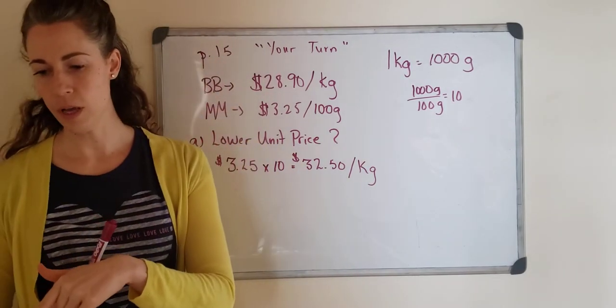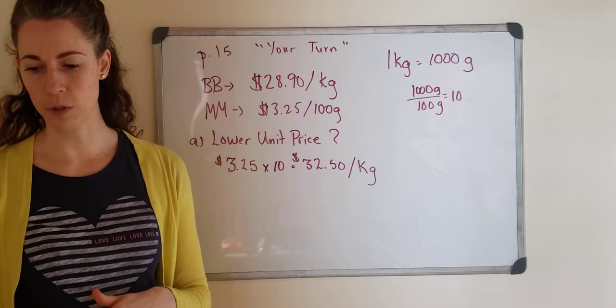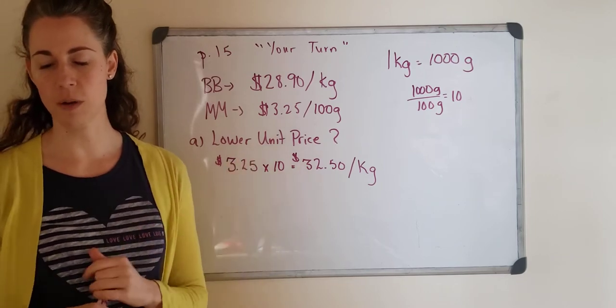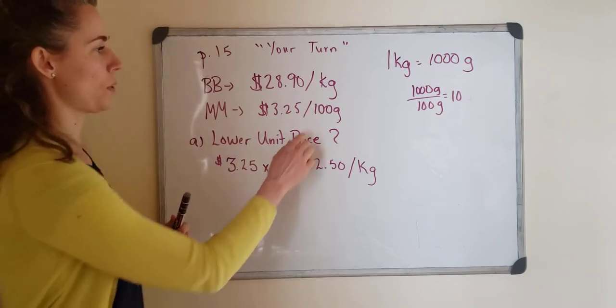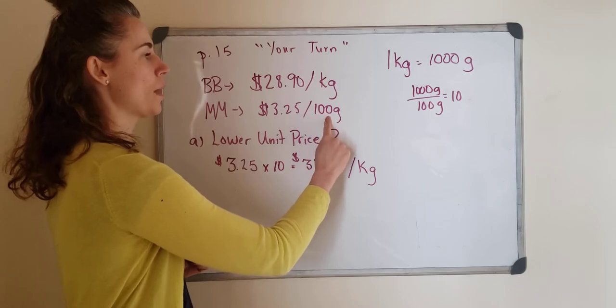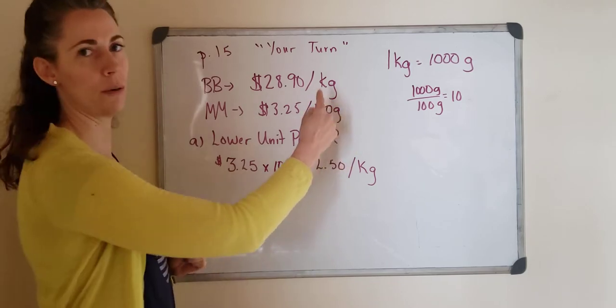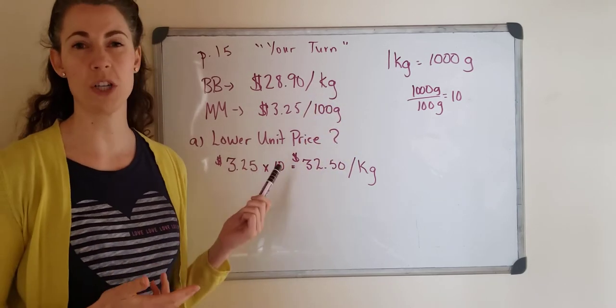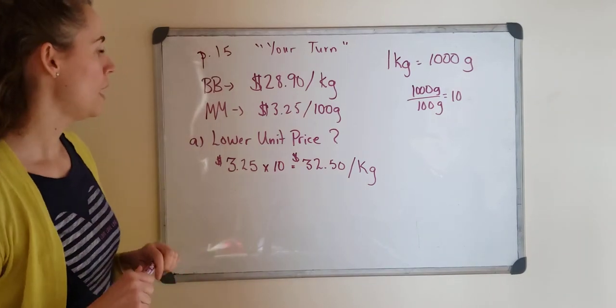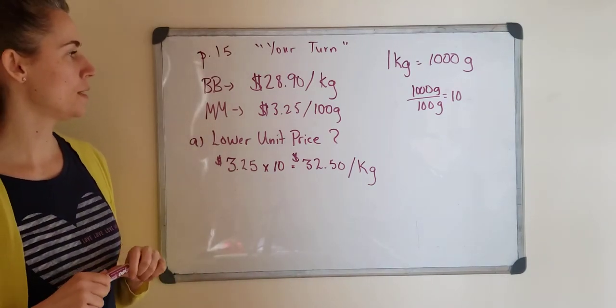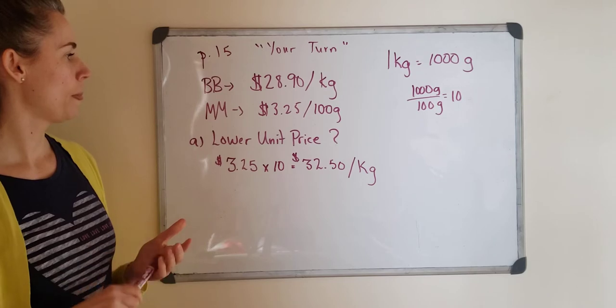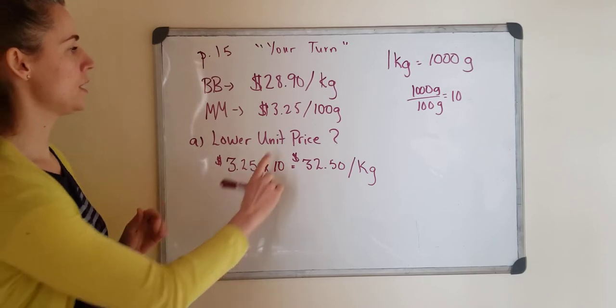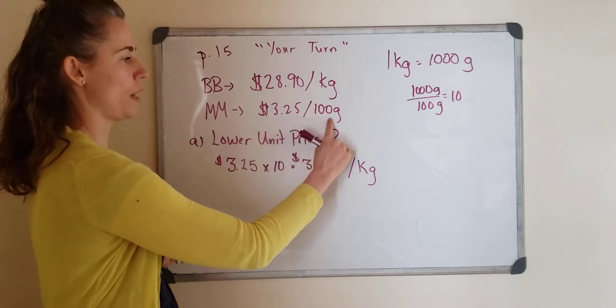When you look at the example in the book, they show you two different ways you can compare. You can either go price per 100 grams or price per kilogram. Either way, I'm just going to pick one and show it but you could do it either way. I'm going to see which has the lower unit price. Let's take this one at $3.25 per 100 grams.